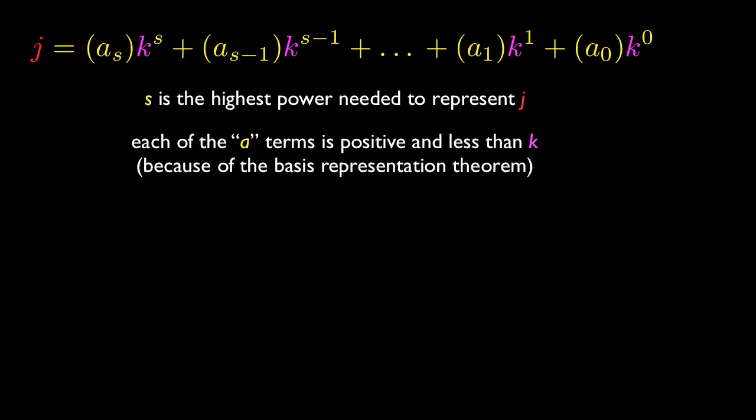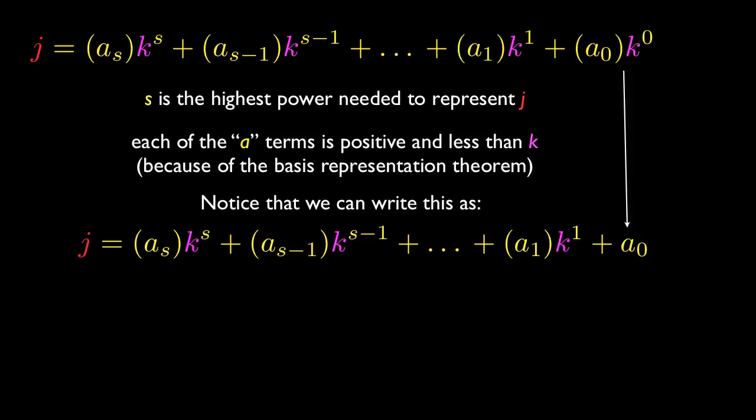Once we have it in this form, we can simplify it a little bit. We can write this with everything the same, except that instead of k to the 0, that's just going to be 1. Because anything to the 0 power is just going to be 1. So we can just write A sub 0 at the end over there, and then all the other powers of k remain the same.